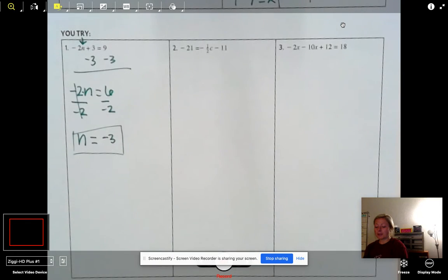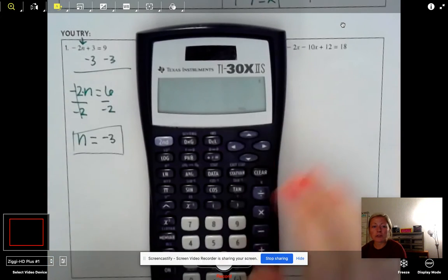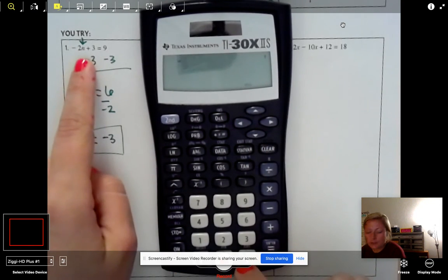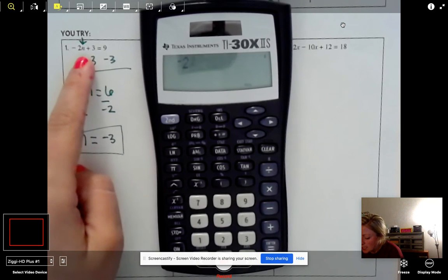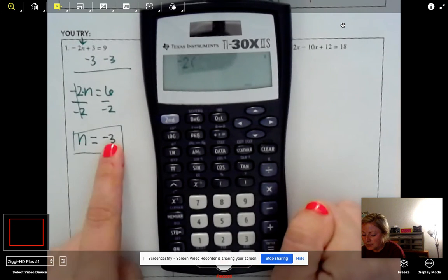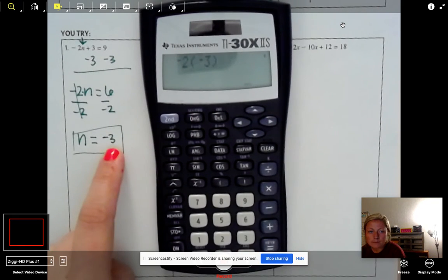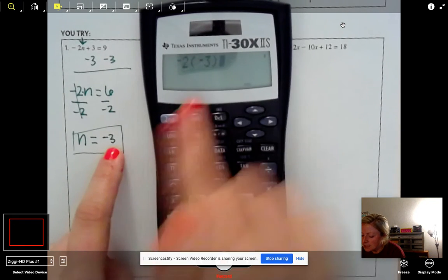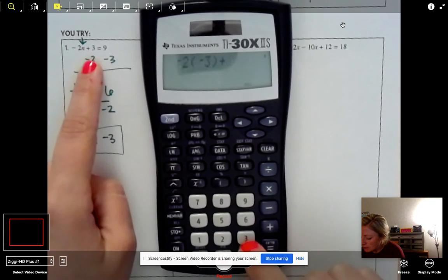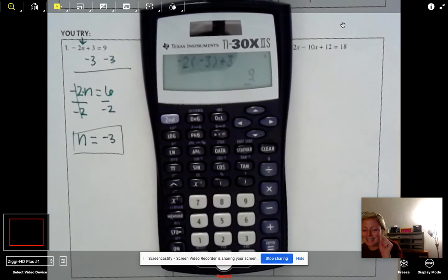So you can plug in or write it out by hand. I want to show you. You could just type this whole thing in your calculator. So look, I see a negative 2. So I'm going to type in negative 2. Now I don't have an n on my calculator, but we just found that it equals negative 3. So I'm going to put that in parentheses, negative 3 in parentheses. Okay. Plus, now what's next in our equation? 3. And I got 9. Did I want it to equal 9? Heck yes, I did.